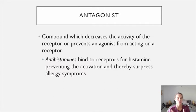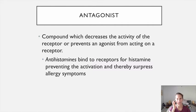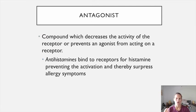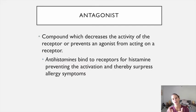When histamine binds the histamine receptor in an allergic situation, it causes itching, swelling, mucus production, and local vasodilation. What an antihistamine does is park on that receptor site so that histamine that is released anyway doesn't get on — it blocks the action of histamine. We would call that a histamine antagonist, or a histamine blocker, and it has an opposing effect.